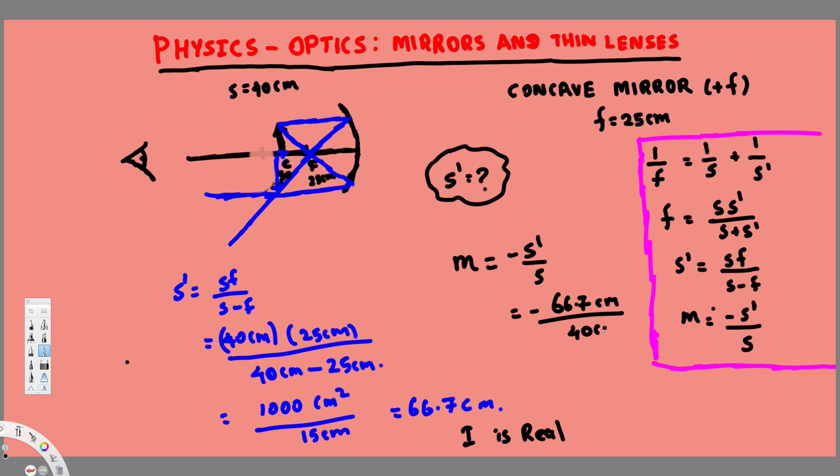If you calculate this, you will get negative 1.67. So since we have a negative value, this means this is inverted, and the image that is formed is going to be 1.67 times larger than the original object.